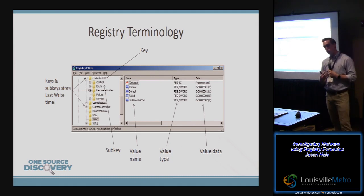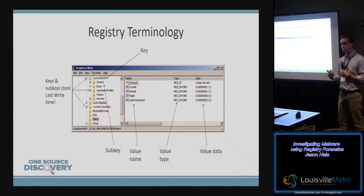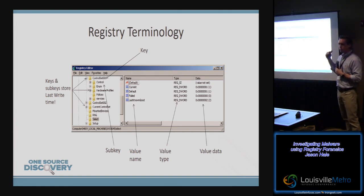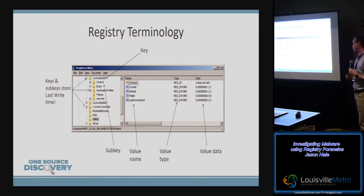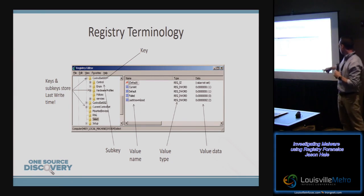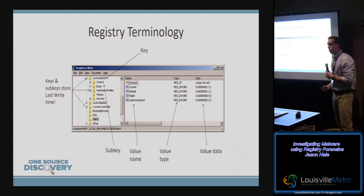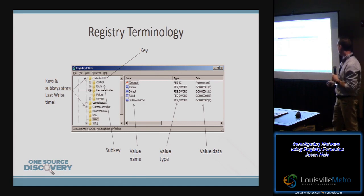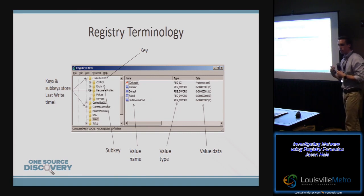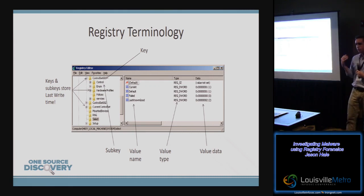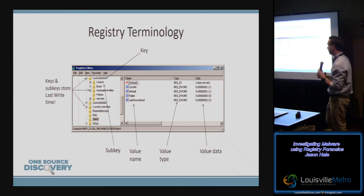We don't necessarily know what the change is — it could be a value added, a value removed, something updated. But if we know how that key is updated and the frequency and types of events that update it, we can make some inferences about what that last write time actually represents. Outside of keys and subkeys, you've got values. Values have a value type, a name, and the actual content — the value data. The type can range from a DWORD (a four-byte value) to a string or a binary blob.